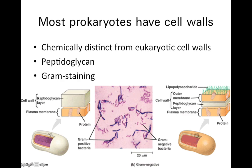In gram-positive bacteria, there's a single peptidoglycan layer that is found external to the plasma membrane. We've got a plasma membrane of phospholipids, just like all organisms have, that forms the boundary of the cell. And external to that, we might have this peptidoglycan layer, which forms the wall of the cell.